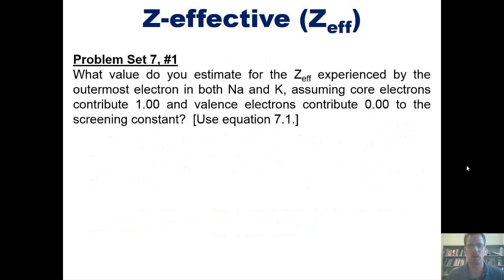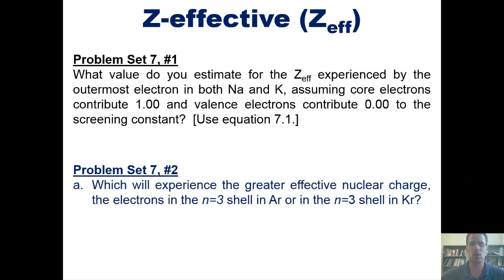That takes us to a set of problems from our problem set. What value do you estimate for the Z-effective experienced by the outermost electron in both sodium and potassium, assuming core electrons contribute 1.00 and valence electrons contribute 0.00 to the screening constant? And which will experience a greater effective nuclear charge, or Z-effective: the electrons in the n=3 shell in argon or in the n=3 shell in krypton?